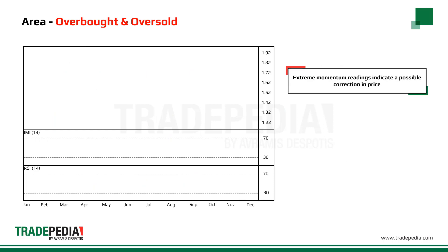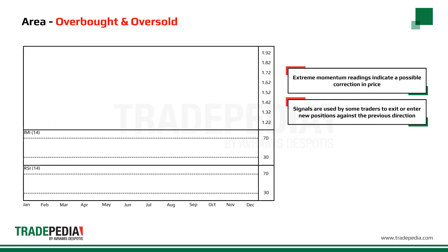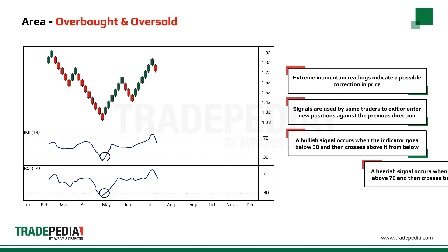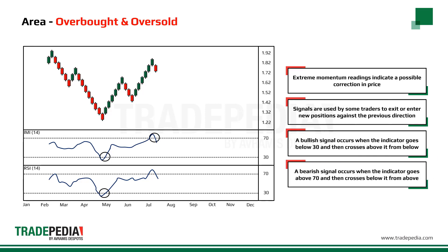Extreme momentum readings indicate a possible correction in price. These signals are used by some traders to exit or enter new positions against the previous direction. When using IMI and RSI, a bullish signal occurs when the indicator goes below 30 and then crosses above it from below. A bearish signal occurs when the indicator goes above 70 and then crosses below it from above. If more than one indicator gives the same signal, the stronger it becomes.